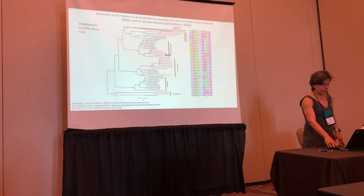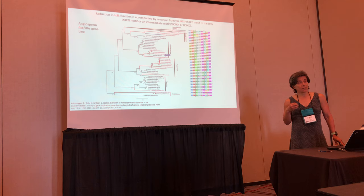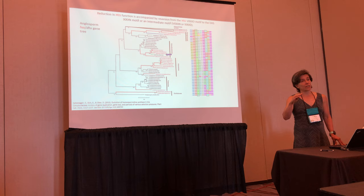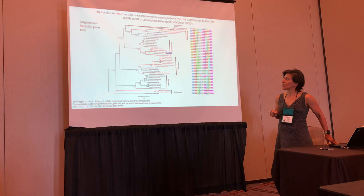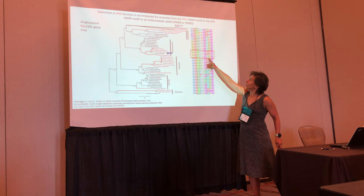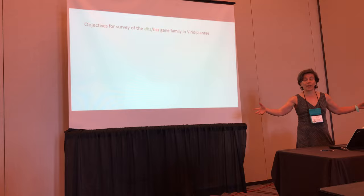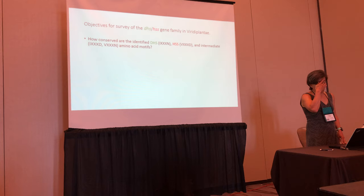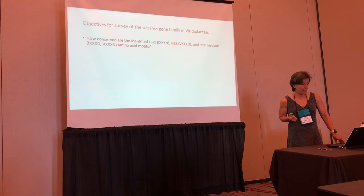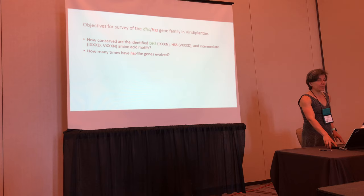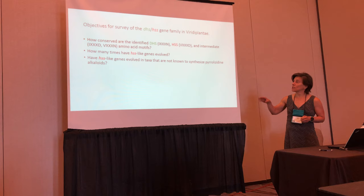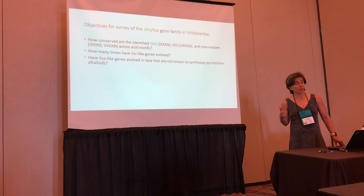Here is an example: Ipomoea alba is a species that doesn't produce pyrrolizidine alkaloids; its HSS has lost function compared to related species, and we see it has reverted to the IN motif from the VD motif. Now, my colleagues and I have taken this preliminary work and decided to expand it across all green plants. Our objectives are to answer: how conserved are the identified DHS and HSS motifs and the intermediate motifs? How many times have HSS-like genes evolved? And have HSS-like genes evolved in taxa not known to synthesize pyrrolizidine alkaloids?